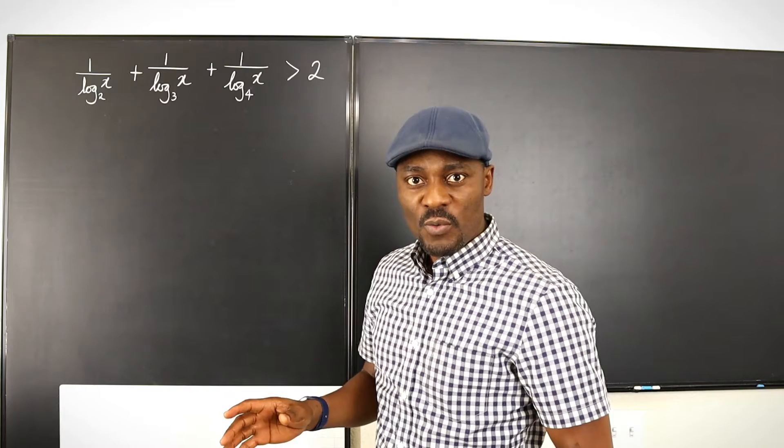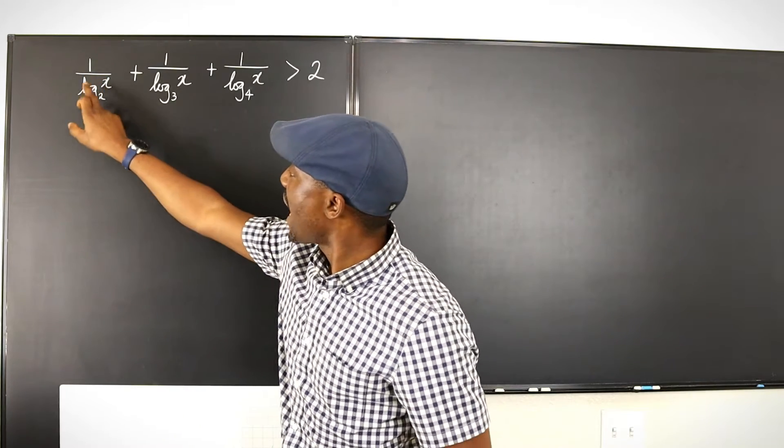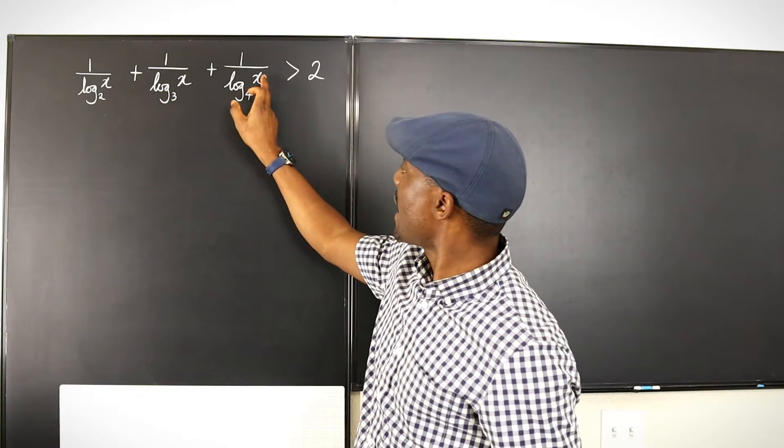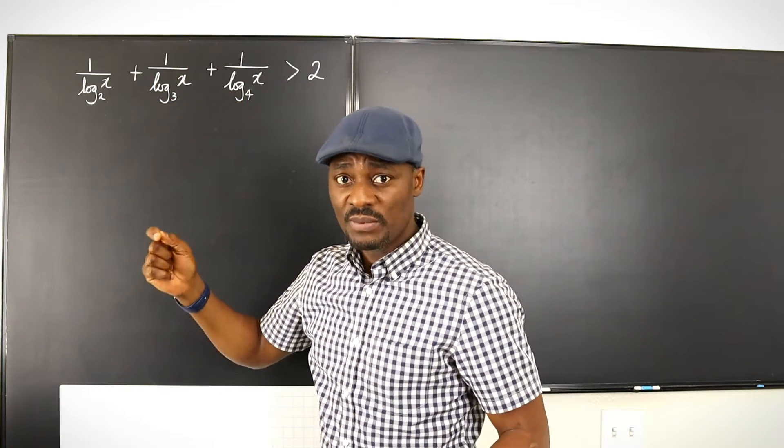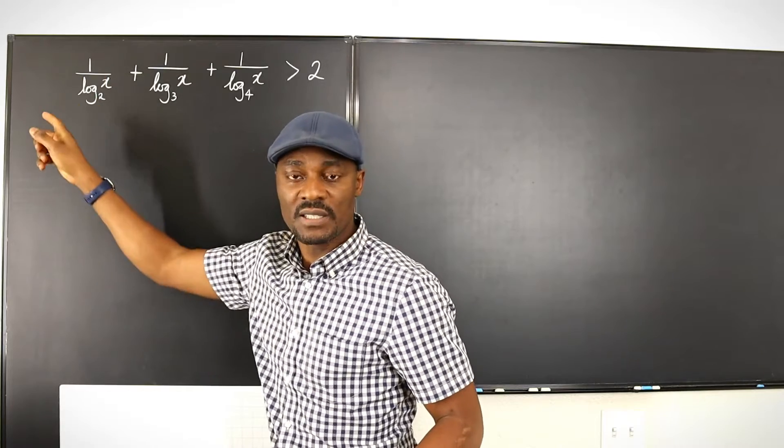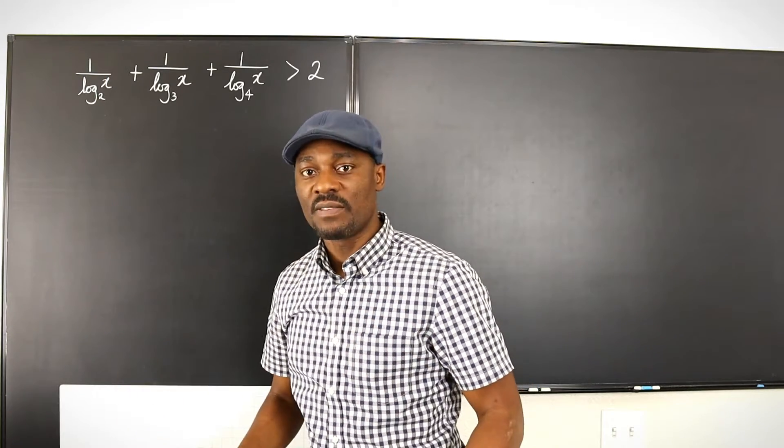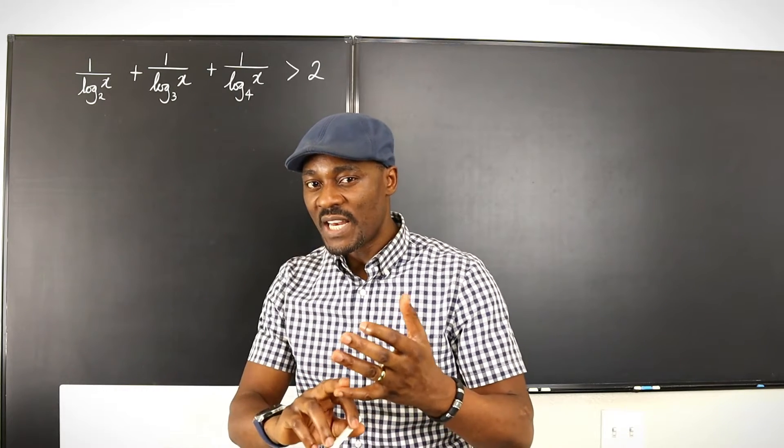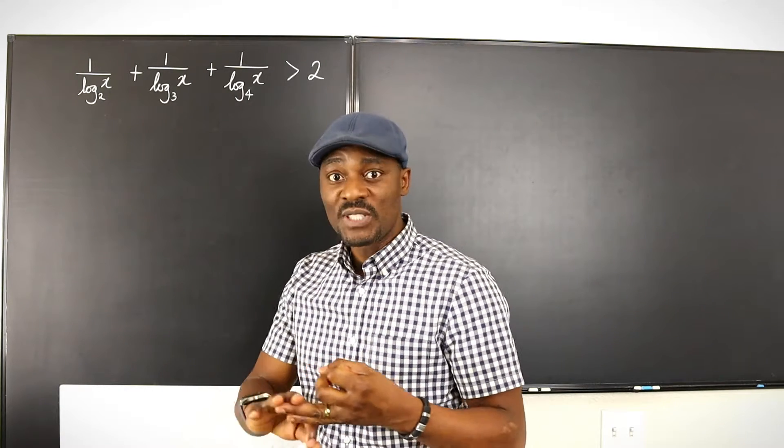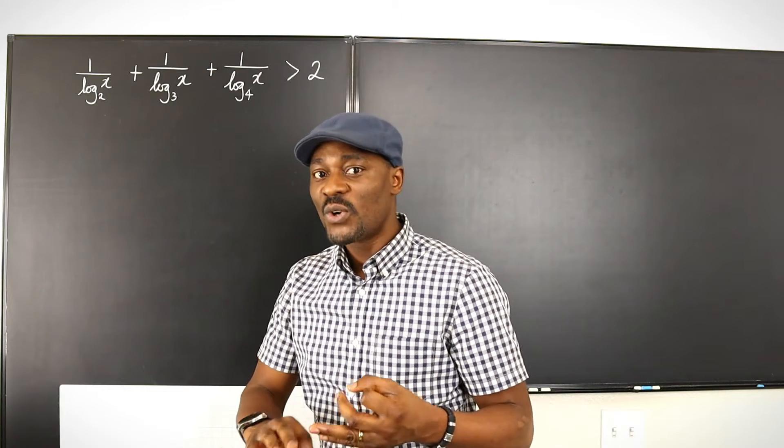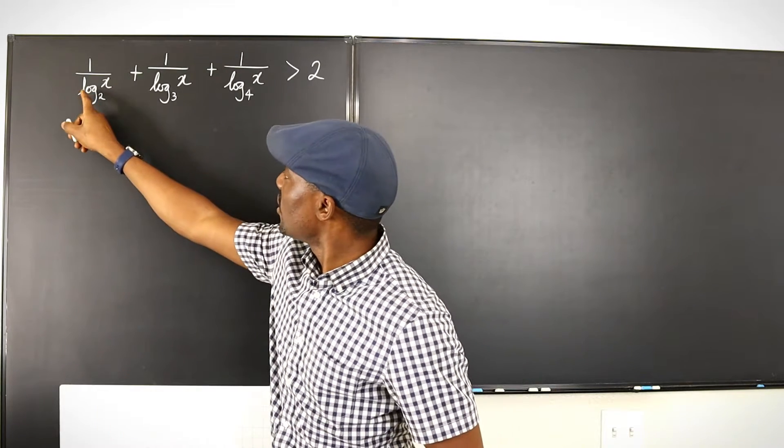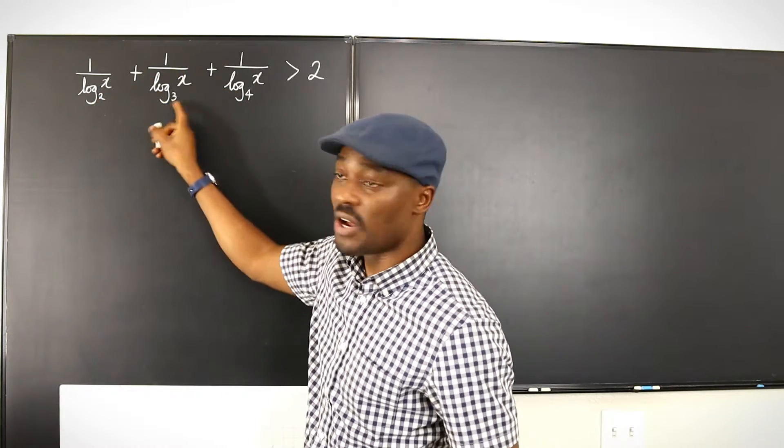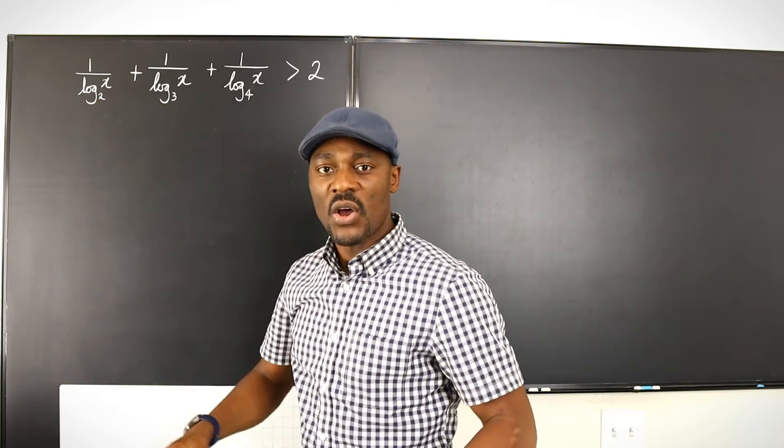And also we see that you can't have log x to base 2 or log x to base 3 or log x to base 4 being zero because if you obtain zero as your answer, then this becomes undefined. We also do not want undefined in rational expressions. So we have to exclude one because the logarithm of 1 to any base gives zero as the denominator.